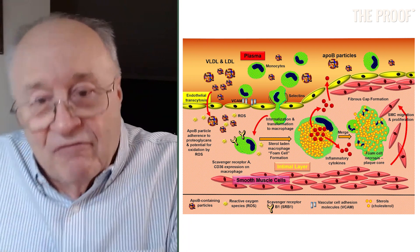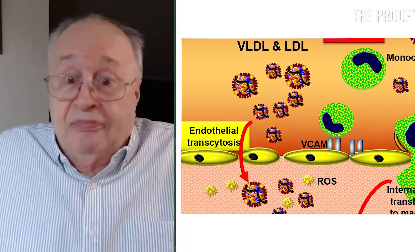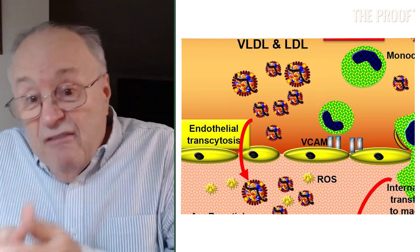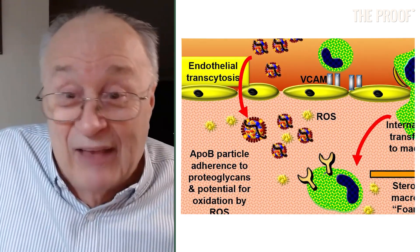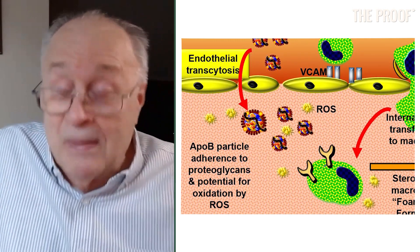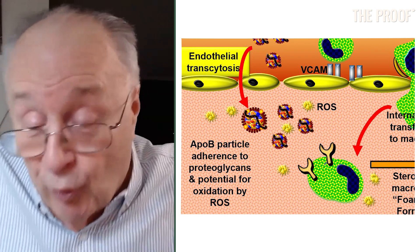That ApoB protein on the surface of the particle has great affinity for connective tissue molecules — glycoproteins that bind the ApoB particle. It's like flies on fly paper. It's stuck. Now, sometimes it's just stuck there, nothing ever happens, who cares? Very few of them break free and can leach out again back into the plasma — perhaps a minuscule number. But once they land there, they're stuck in the arterial wall.